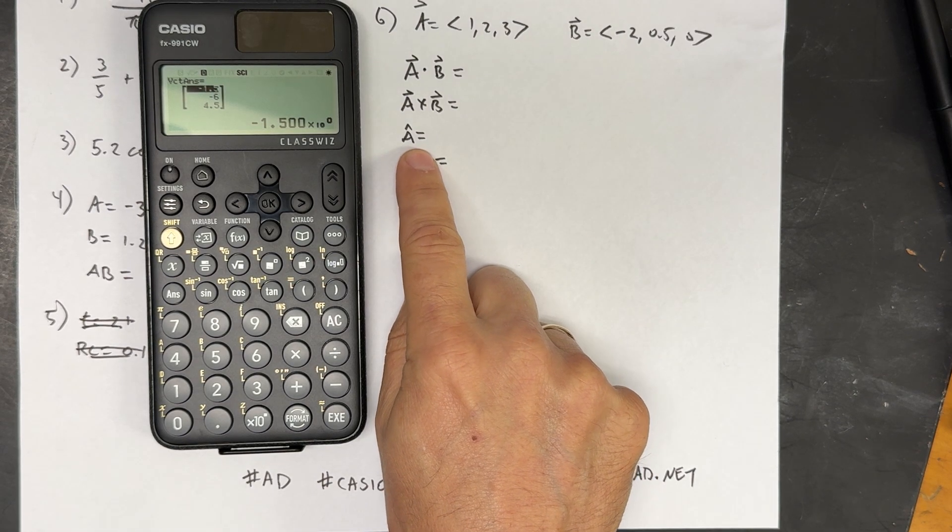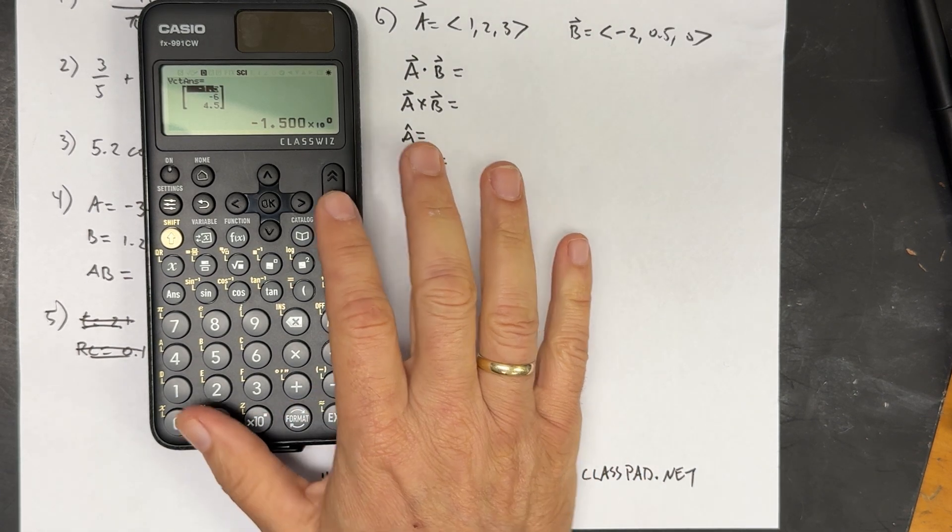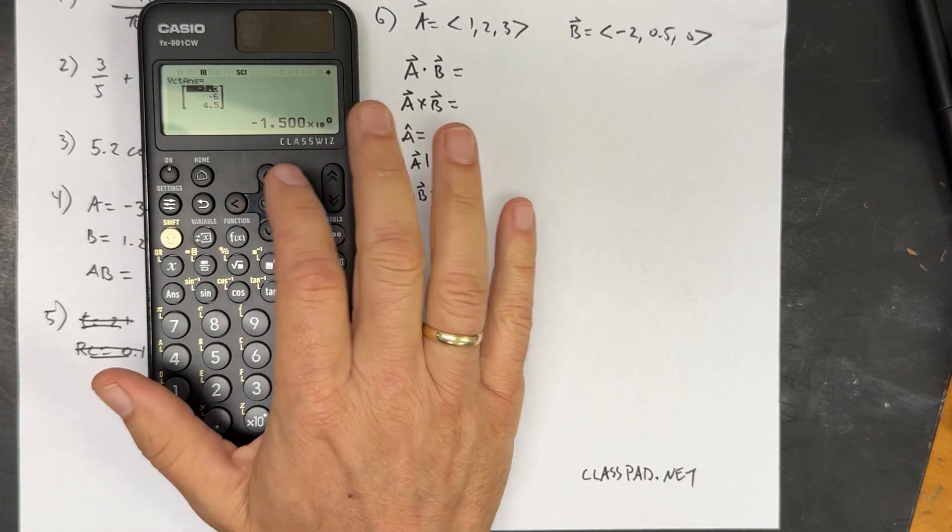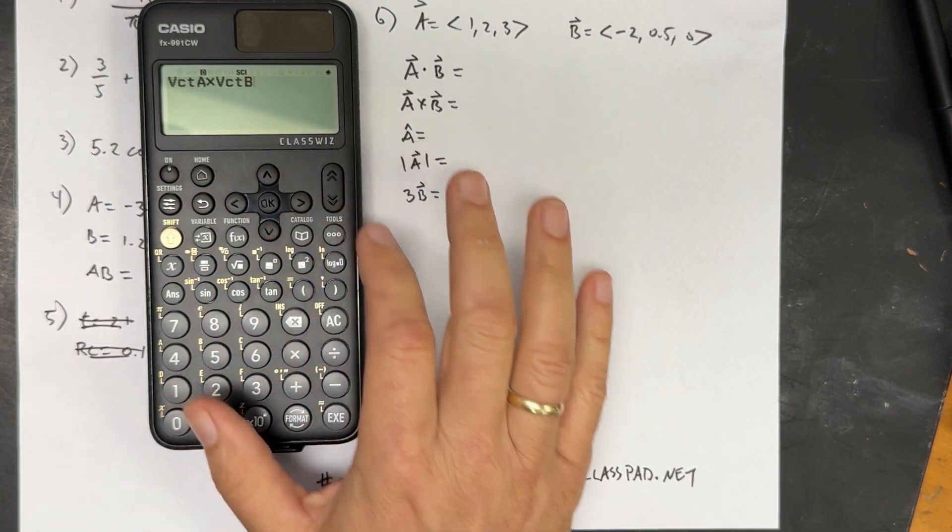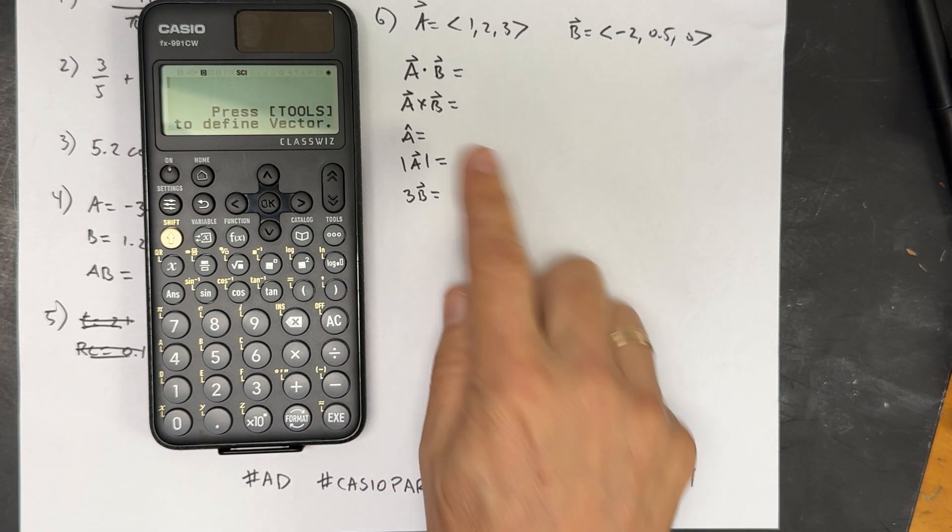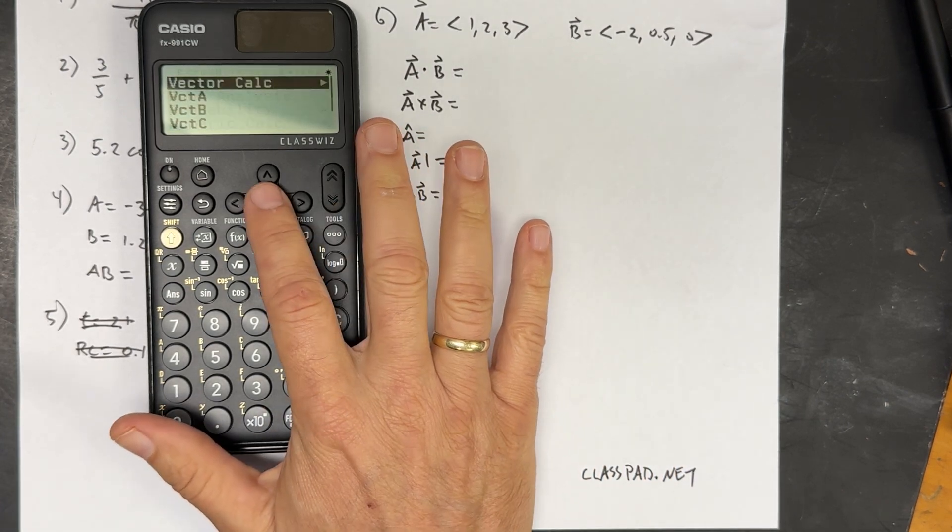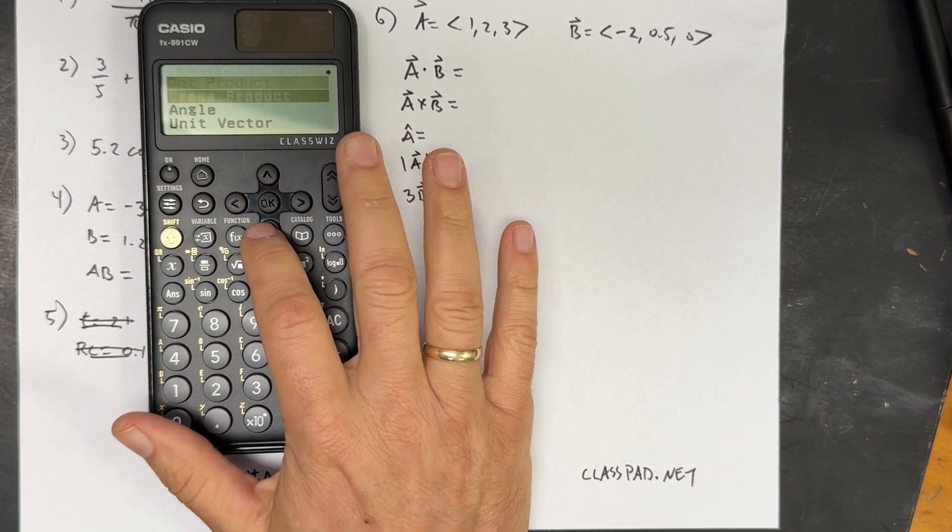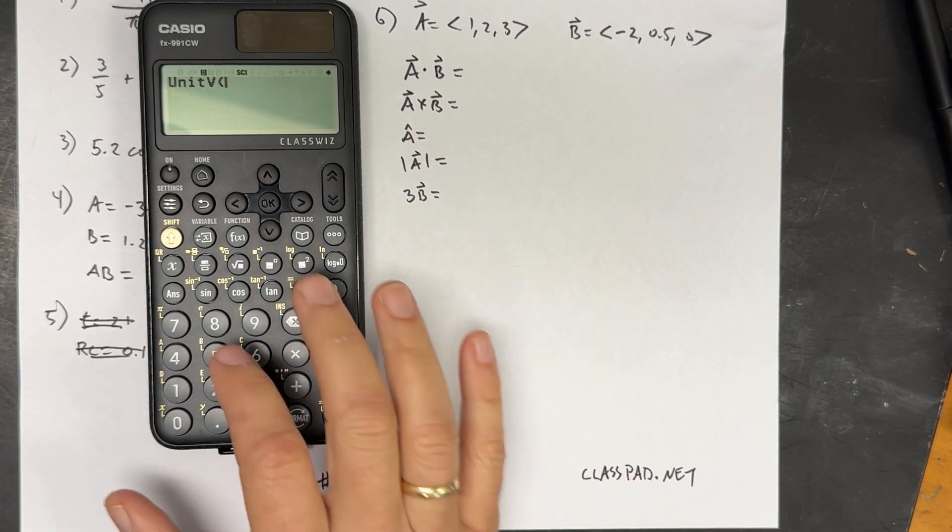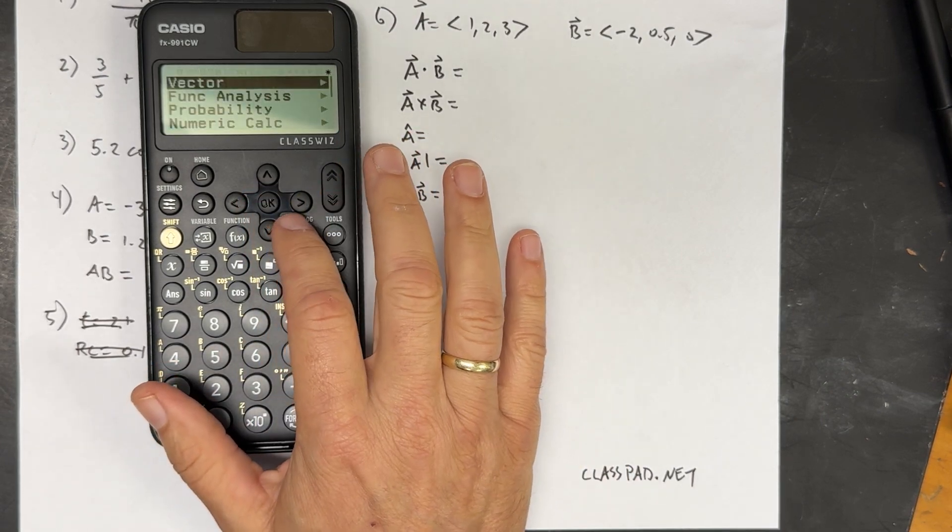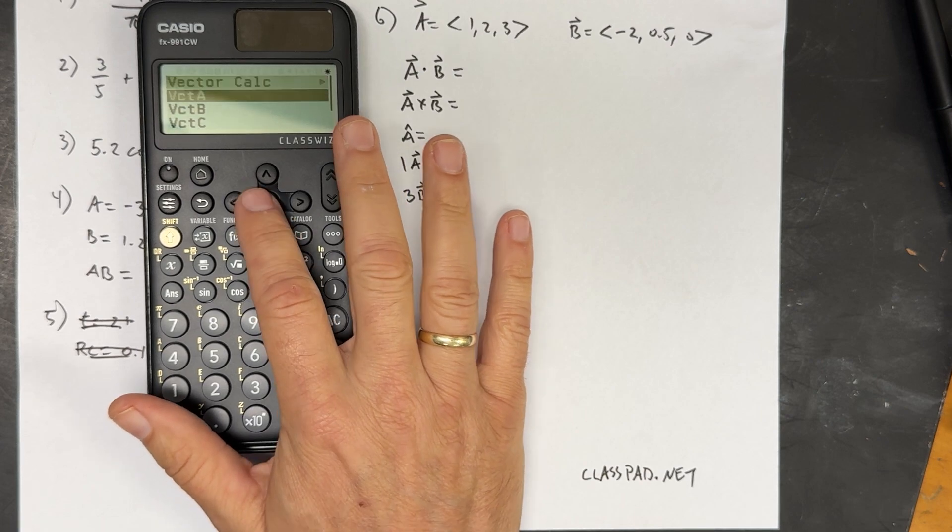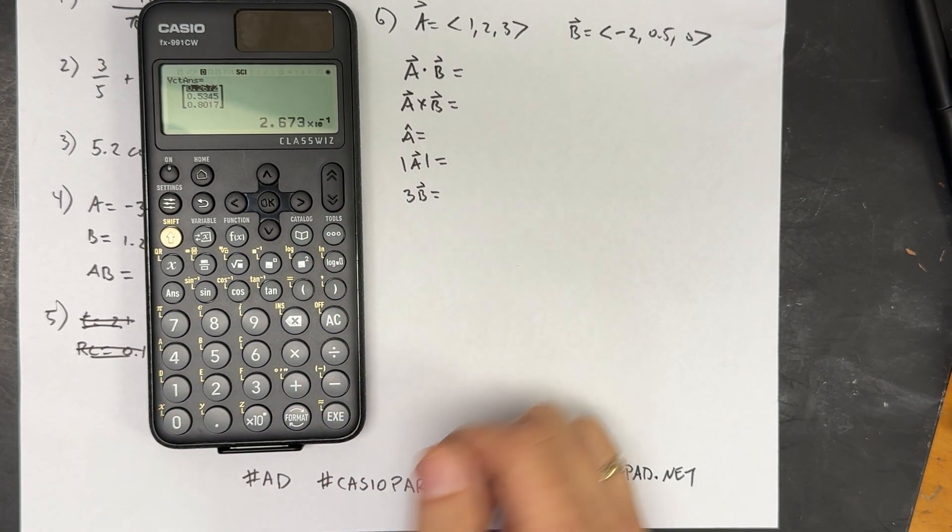What about the unit vector of A? That one does come up in physics. So let's go back. And I want to do unit vector base. So I'm going to go to catalog, vector, vector calc, unit vector. And then I need the vector A. Catalog, vector, vector A. Execute. So there is the unit vector. If you take the magnitude of that vector, you do get one.